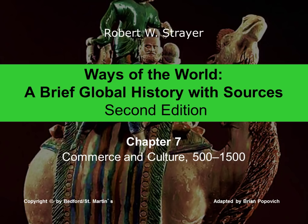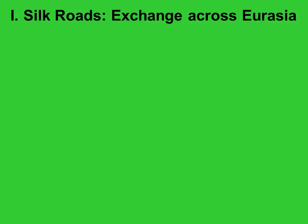Hey guys, Coach Pop here. Thanks for joining me for this week's video lecture. Today we're looking at Strayer's Chapter 7, Commerce and Culture. In the opening section, Strayer begins by raising the question of globalization — how interconnected we are in our current society — and getting us to think about where exactly that comes from. One of the main ways that developed over time is through trade routes.